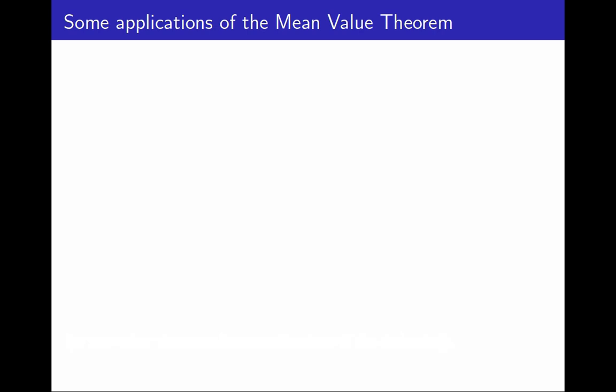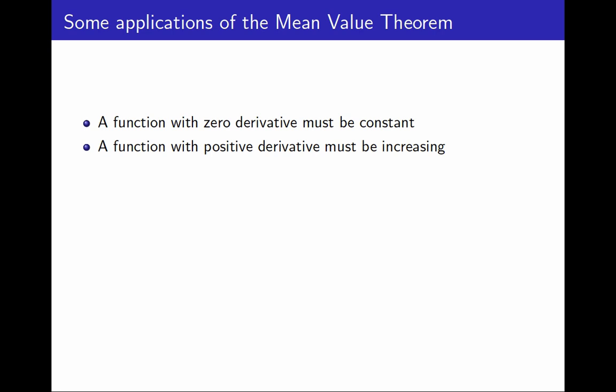Here is a list of just some of the consequences of the mean value theorem. To prove that if a function has zero derivative, it must be constant, that's the MVT. To prove that if a function has positive derivative, then it must be increasing, that's the MVT. In fact, all integration methods rely on the MVT.